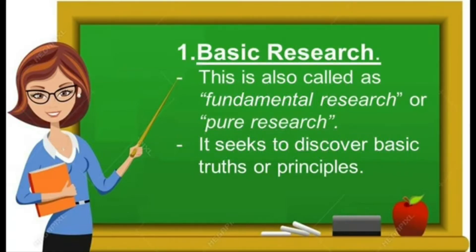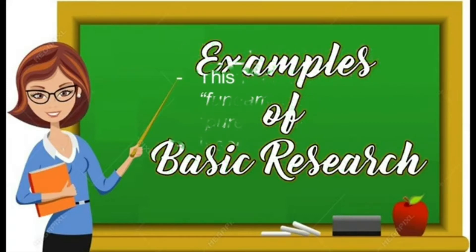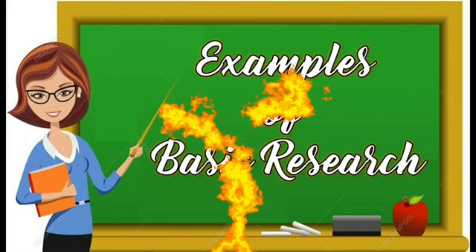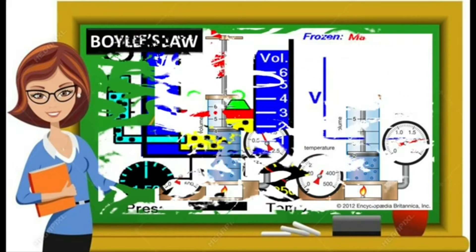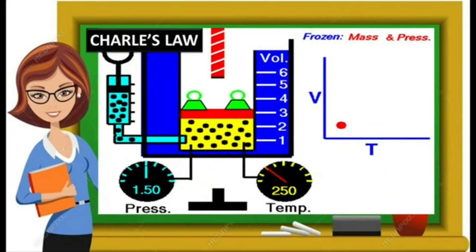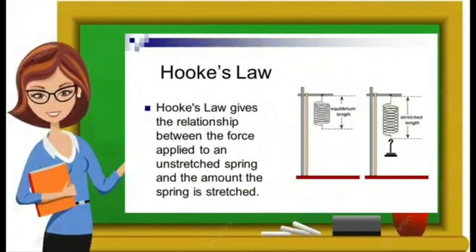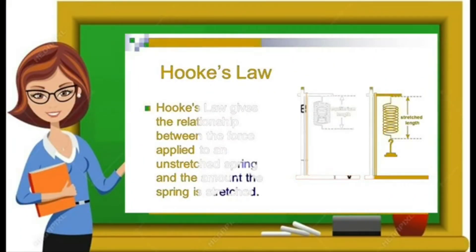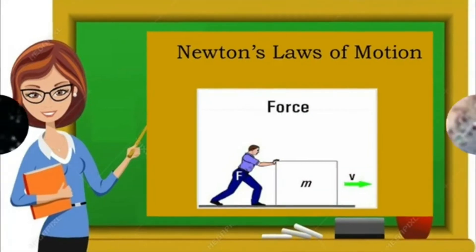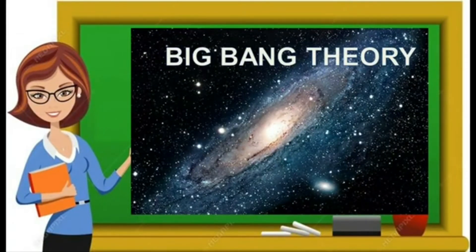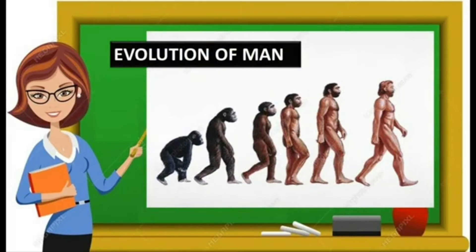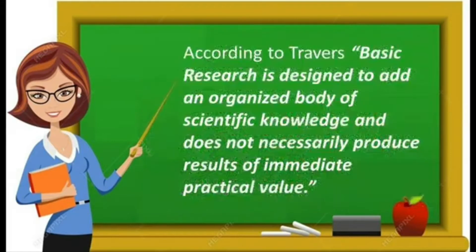Number one is basic research, also called fundamental research or pure research. It seeks to discover basic truths or principles. Examples of basic research include the Big Bang Theory and the evolution of man. According to Travers, basic research is designed to add to an organized body of scientific knowledge and does not necessarily produce results of immediate practical value.